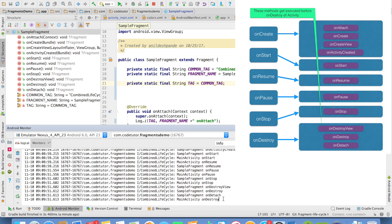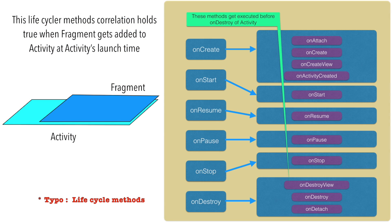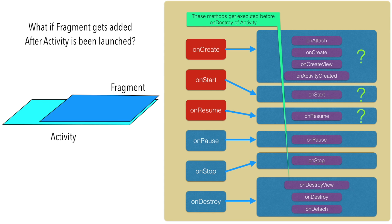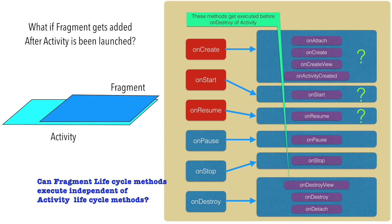And then finally the main activity's onDestroy method gets executed. However, one question that might come to your mind is: what if the activity already exists and then the fragment is added? onCreate, onStart, and onResume would have already been executed. And if you add the fragment later, then what happens? Is there any correlation at that time between the lifecycle methods of the activity and the fragment?